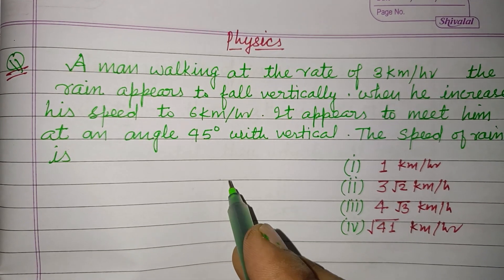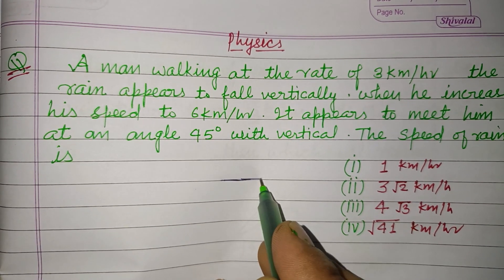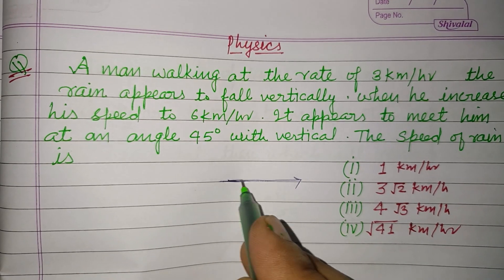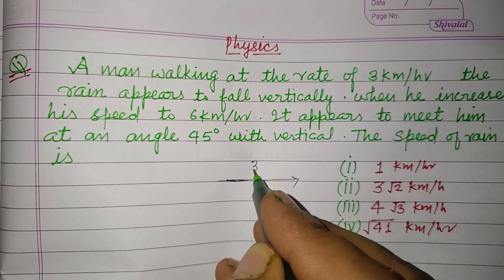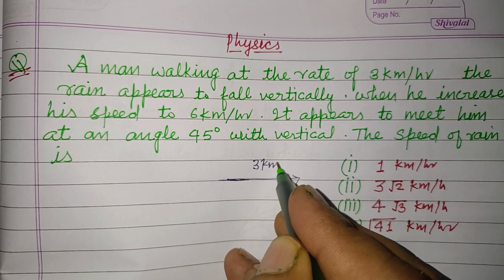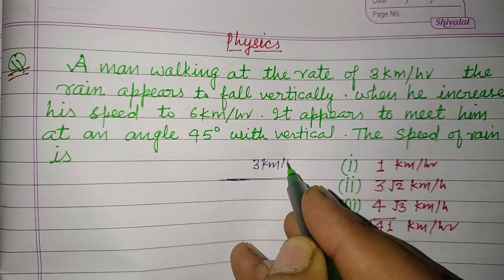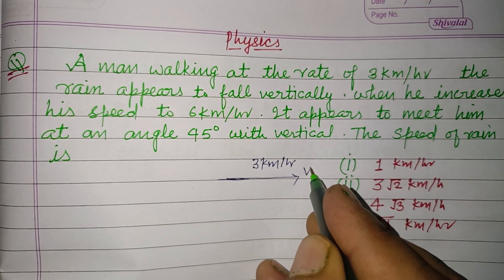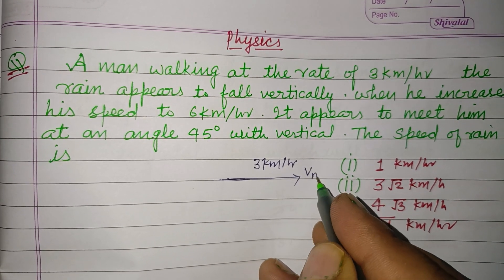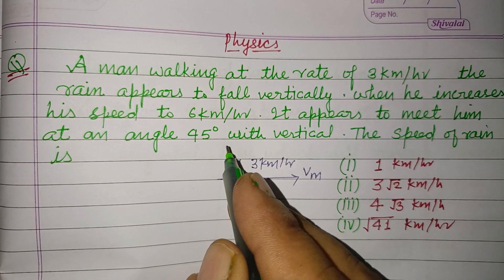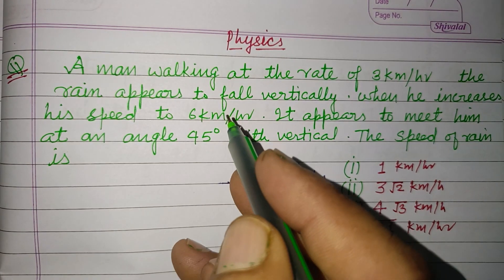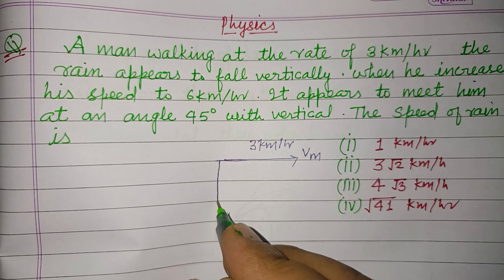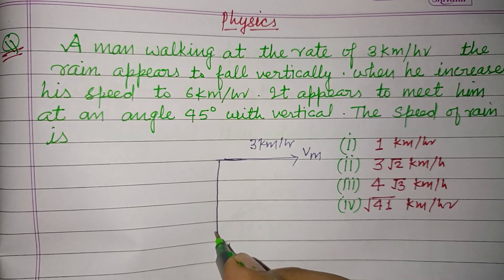The man is walking on a horizontal path, initially with 3 km per hour. This is the velocity of the man, and rain is falling vertically in the downward direction, so we take it in the downward direction.